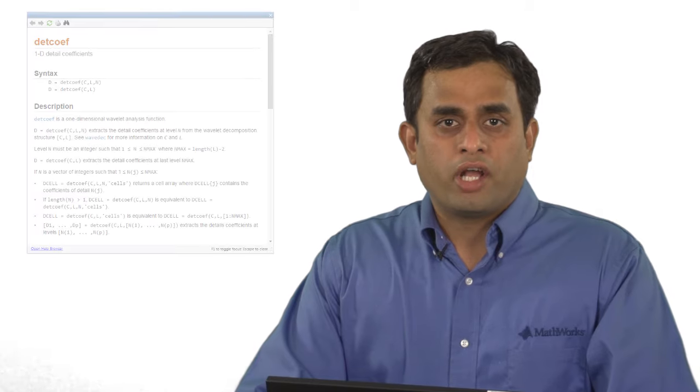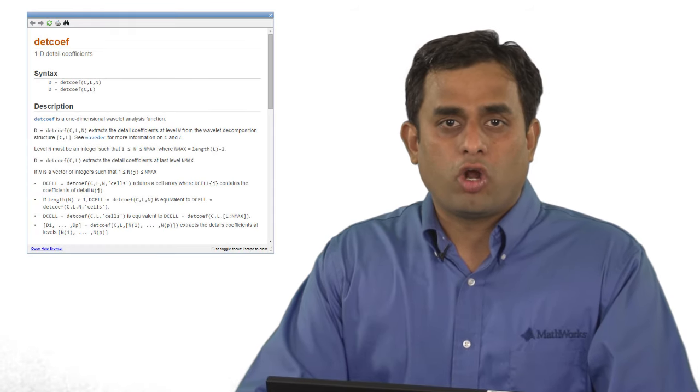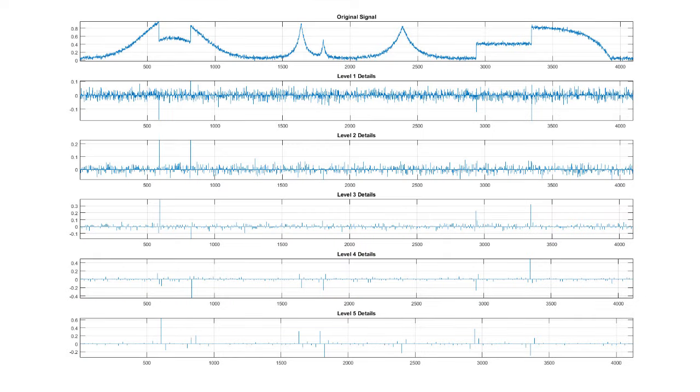Let us take a closer look at the detail subband. To extract the coefficients, you can use the detcoef function and plot the coefficients for each level. I am using a helper function to extract and plot the coefficients. What you are seeing here is the original signal along with the details plotted for levels 1 through 5. Notice that the activity in the details reduces drastically as the scale or the level increases.